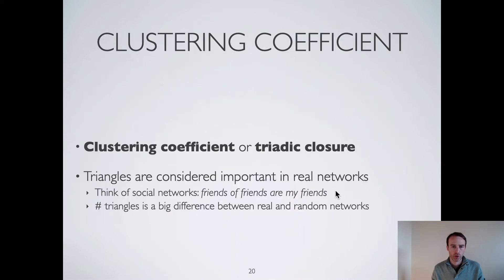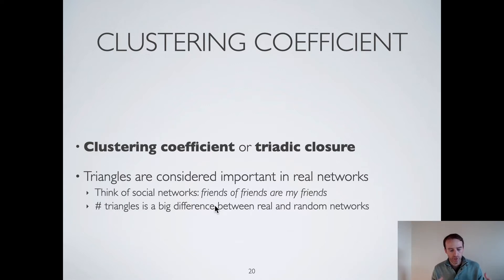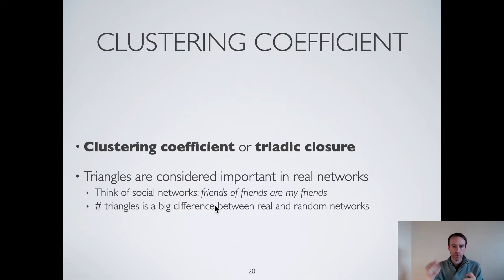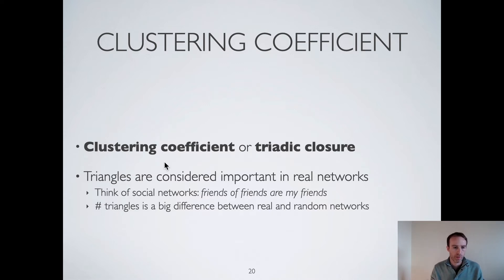An important notion is the clustering coefficient. In social networks, triangles are very important because we consider that the friends of my friends are often my friends — this is observed in real life very often. In a network, if node A is connected to B, and B is connected to C, we ask: is it likely that A and C are also connected? If triangles frequently close in this way, we say we have a high clustering coefficient, also called triadic closure.